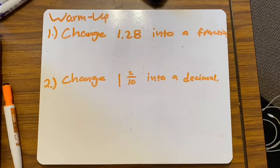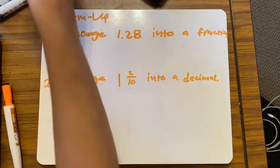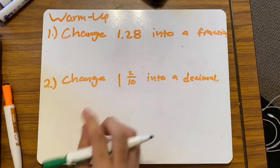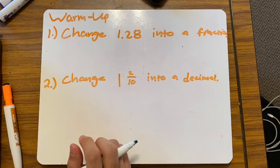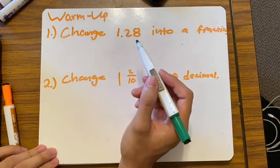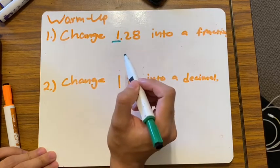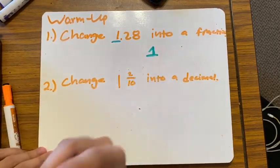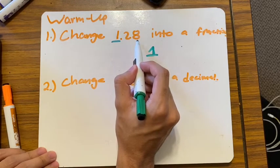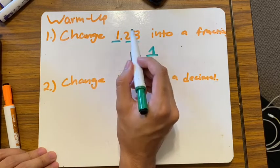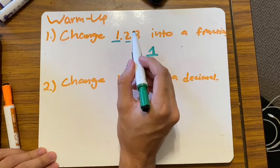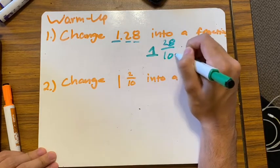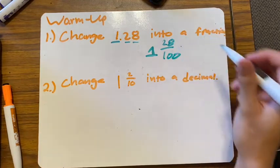Today we're going to be getting a lot of practice on how to switch fractions into decimals and decimals into fractions. Number one says: change 1.28 as a fraction. First, look at whether you have a whole number — yes, one. Then look at the place value your numbers are in: you have a tenth and then a hundredth. Because you have a hundredth, that means you're going to have 28 hundredths. So the answer is one whole and 28 hundredths.